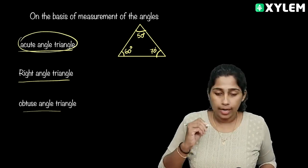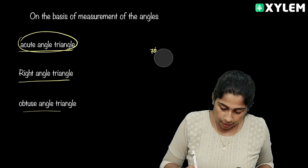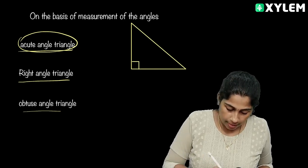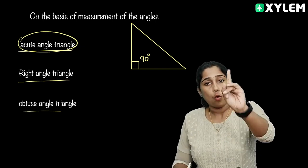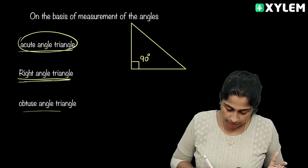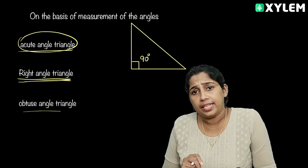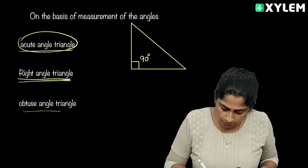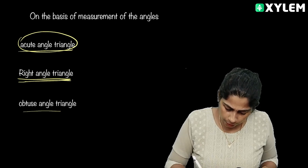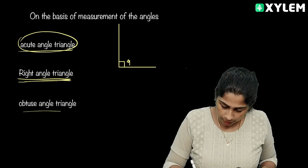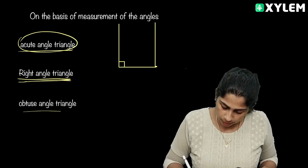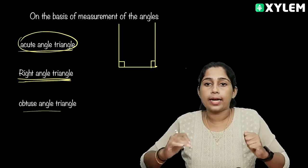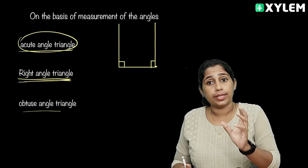Now let us look at the right angle triangle. What are the angles in this triangle? One angle is 30 degrees and one angle is 90 degrees. In that condition, one angle is 90 degrees — I am talking about a right angle triangle.